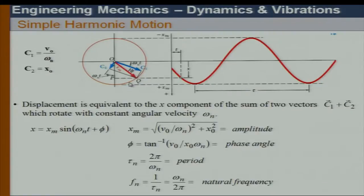Therefore, from the time period of vibration T, completing one cycle from some positive to the next positive displacement, T is defined by 2π/omega_n. The time period of vibration is properly connected with the natural circular frequency of the motion.